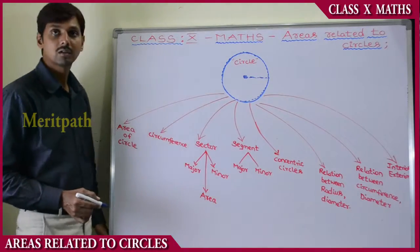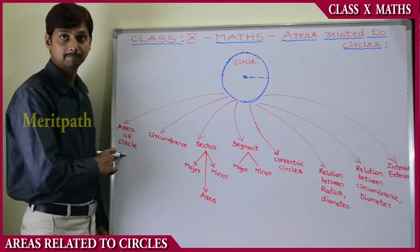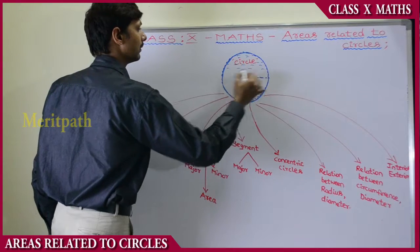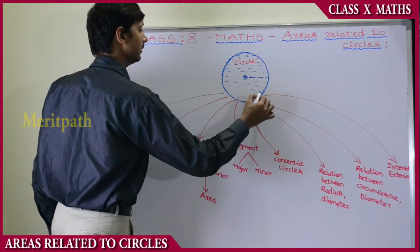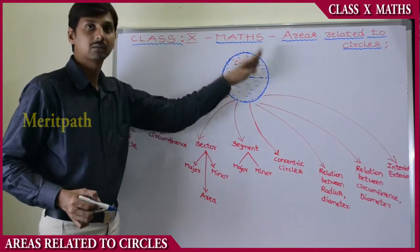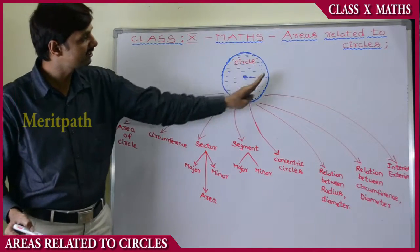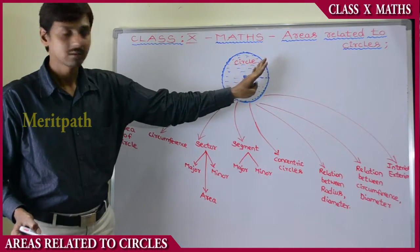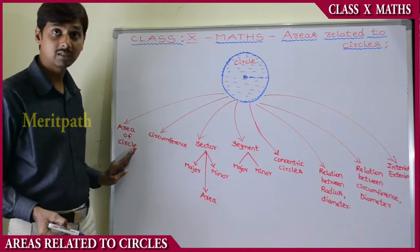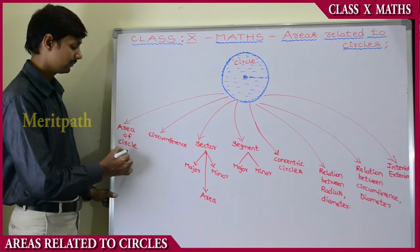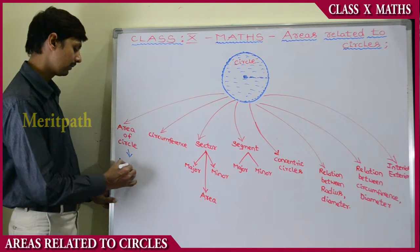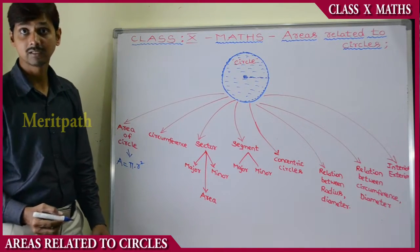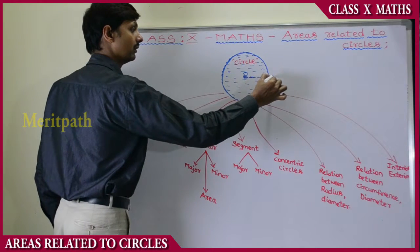Let's find out the area of a circle. The region bounded by the circle — everything inside — is called the area of a circle. We have learned in previous classes that the area of a circle equals pi into r squared, where r is the radius, the distance from the center to any point on the circle.